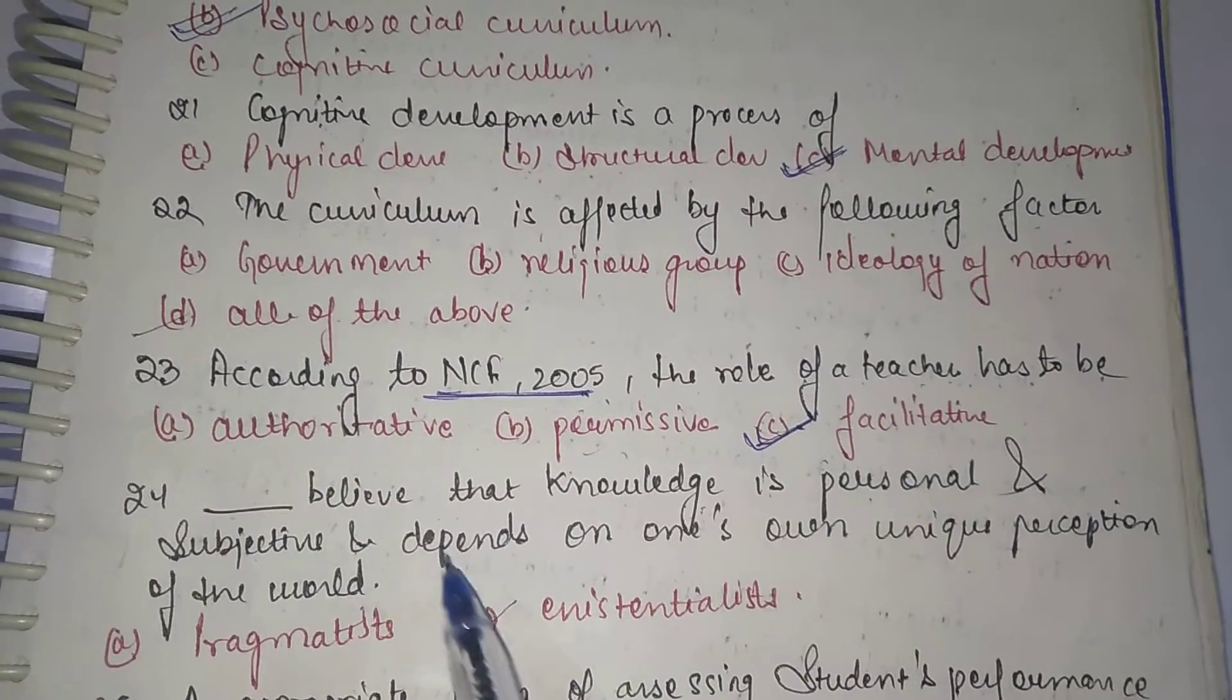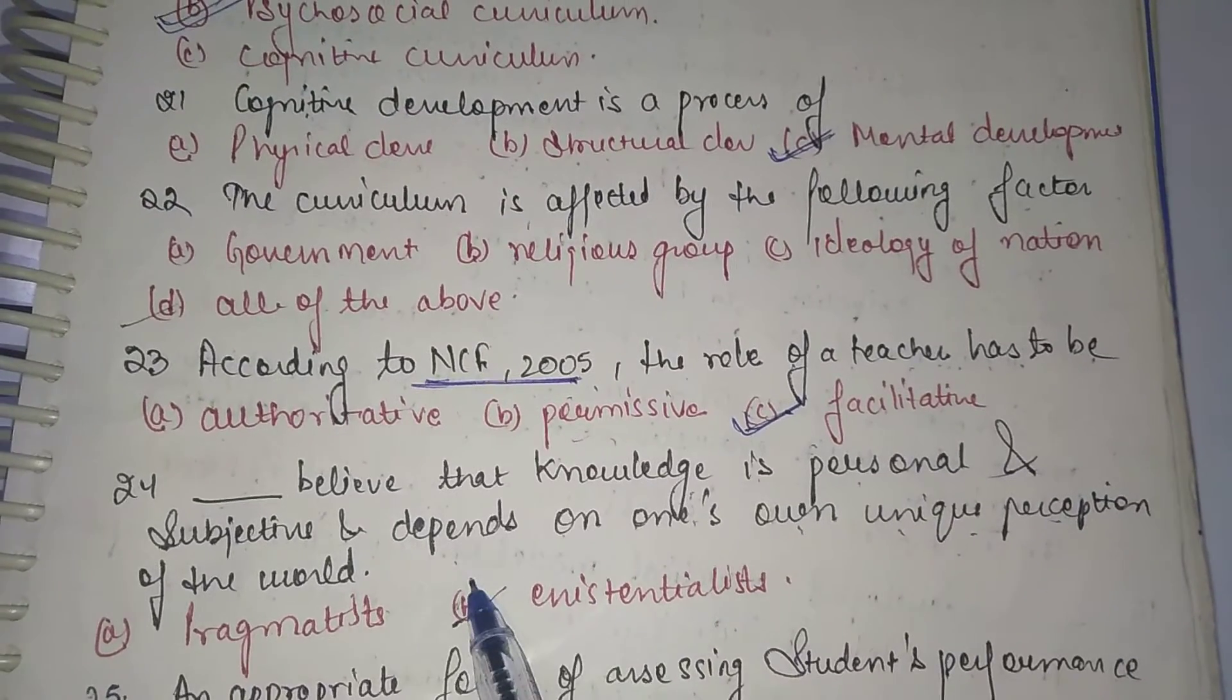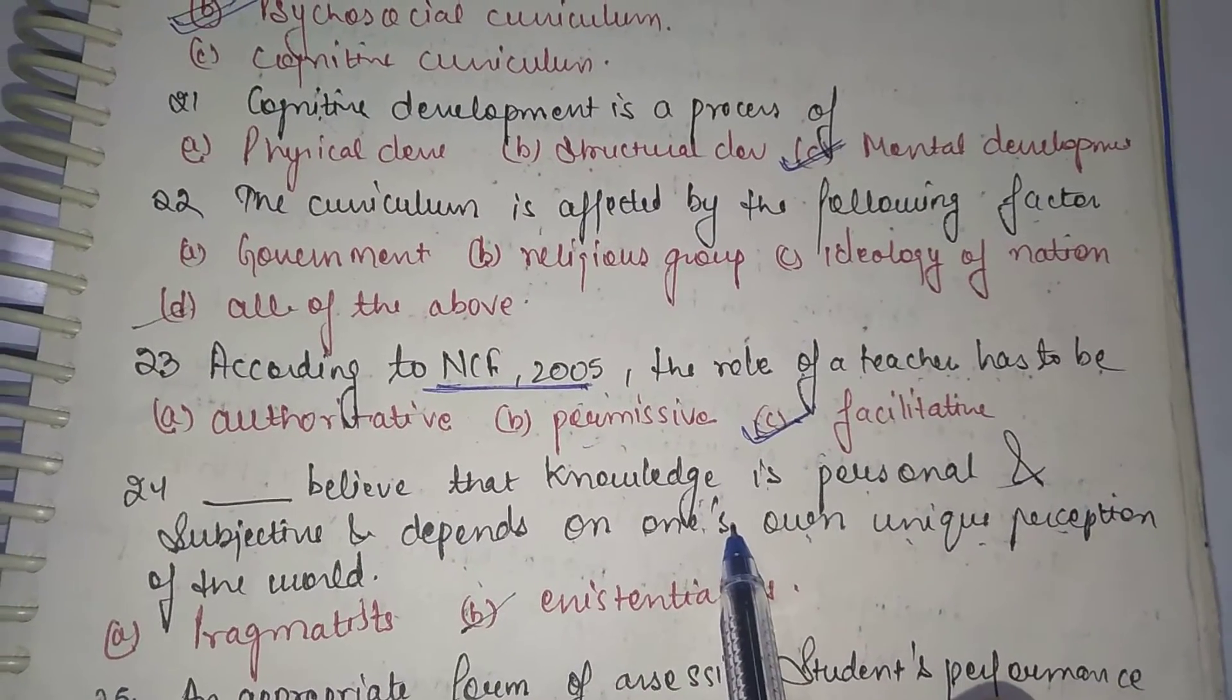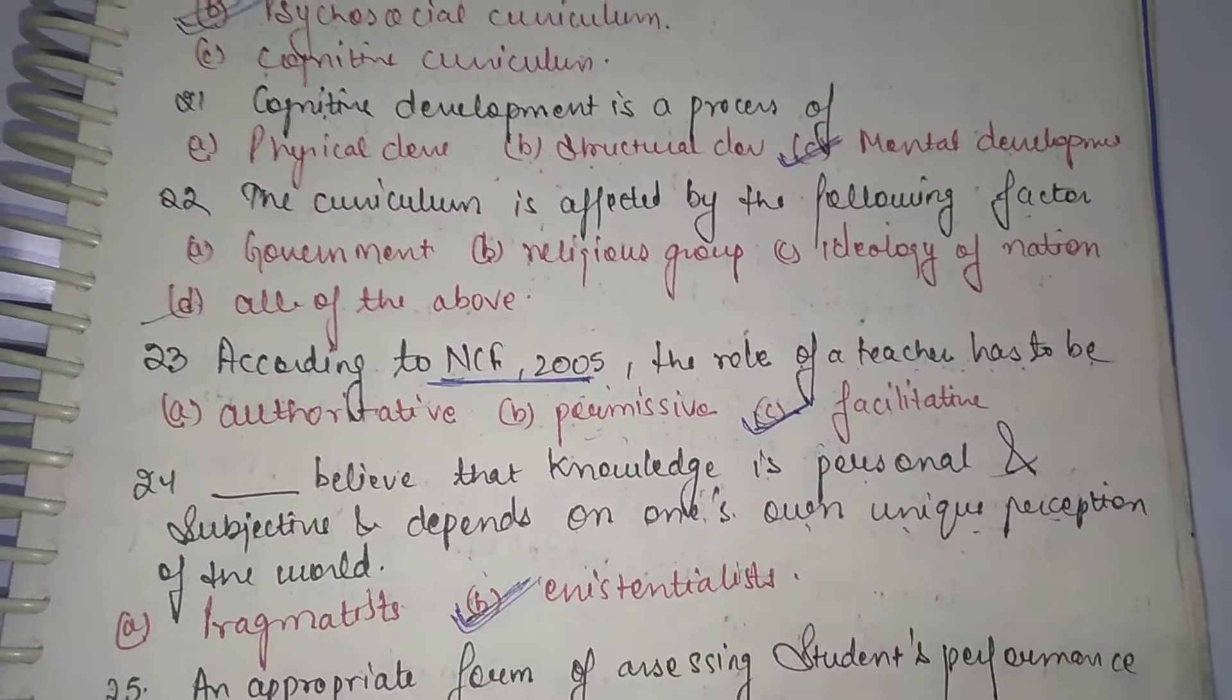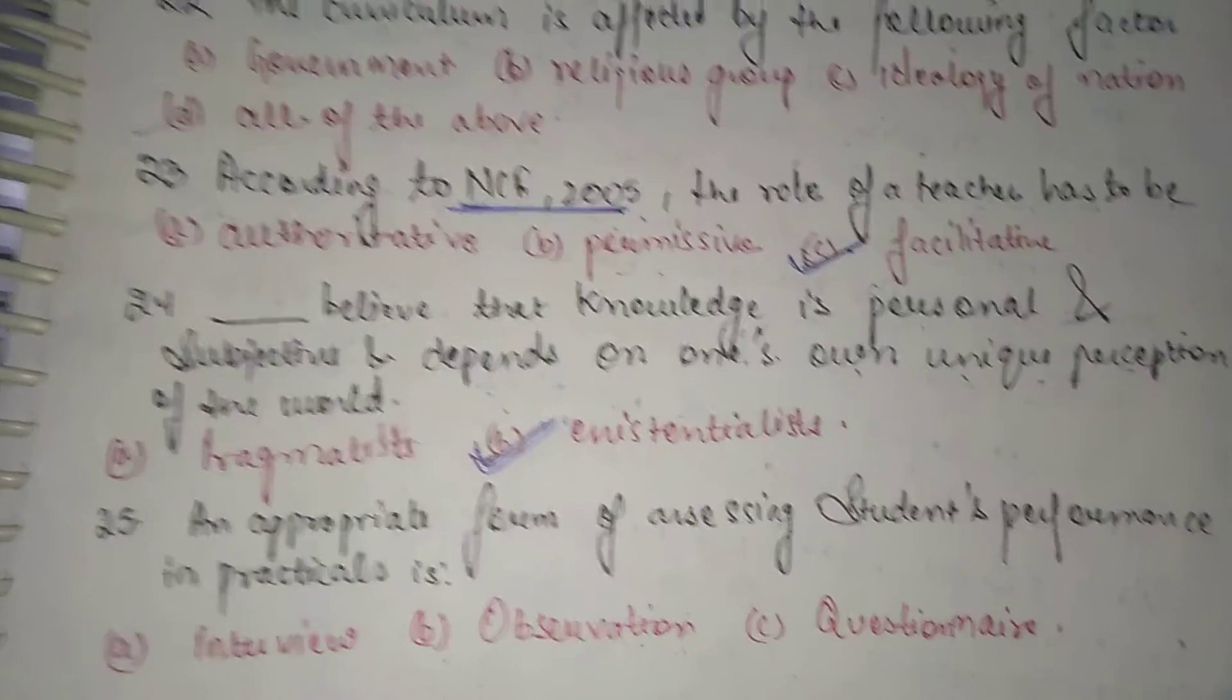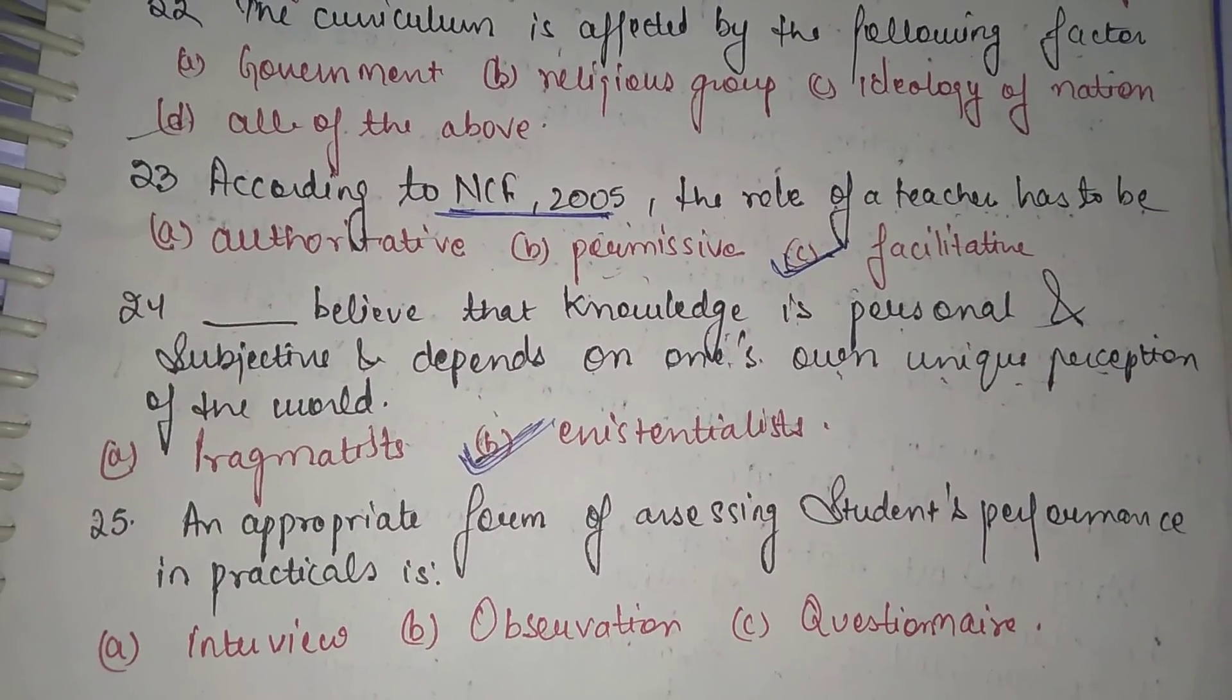Dash believe that knowledge is personal and subjective and depends on one's own unique perception of the world. That theory which basically gives us independence is existentialist. The next is: An appropriate form of assessing student performance in practicals is...